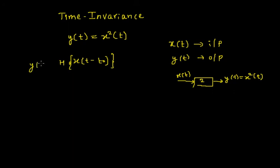That I'll get the output y of t. The nature of the system says that it squares and gets you the output. So if I feed x of t, I get x square of t.